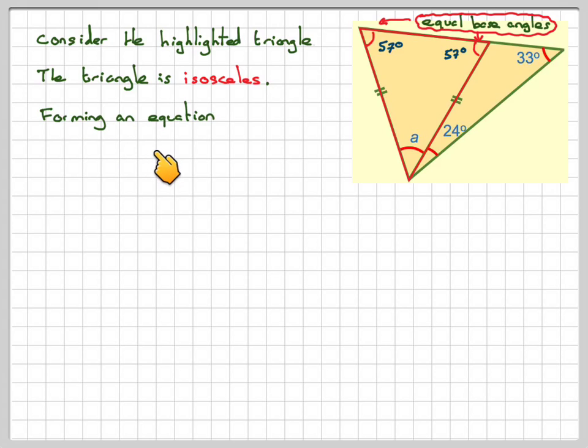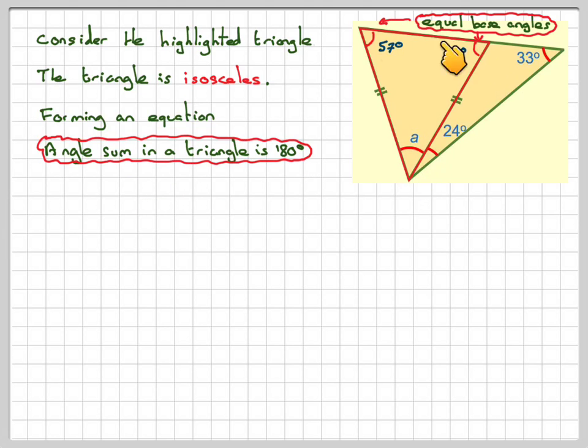Therefore, forming an equation, the angle sum in a triangle is 180 degrees. Using this isosceles triangle, we can say that A plus 57 plus 57 is equal to 180.